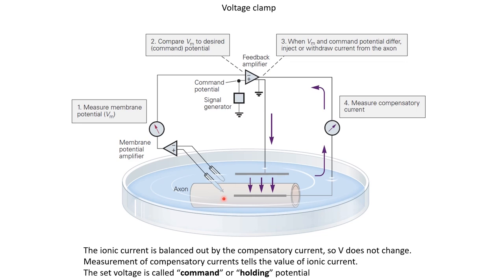This feedback ensures that any slight disturbance of the membrane potential relative to the command potential is corrected very quickly, keeping the neuron at the command potential. Now, if any current flows through ion channels and tries to change the membrane potential, the feedback compensatory current from the amplifier will balance out the ionic currents. If current flows in through ion channels, the compensatory current flows out, and vice versa. A negative value of compensatory current tells us that ionic currents are flowing into the neuron.